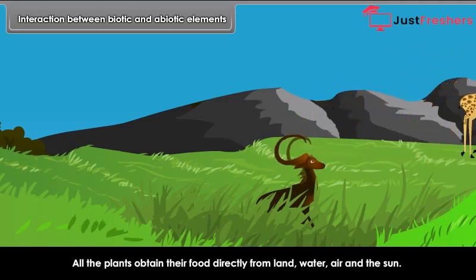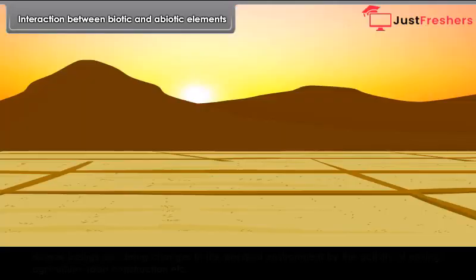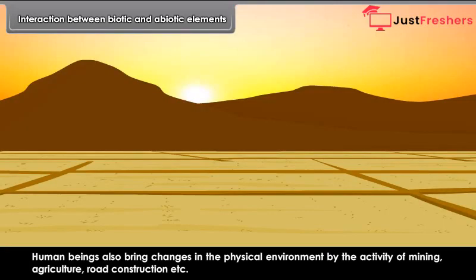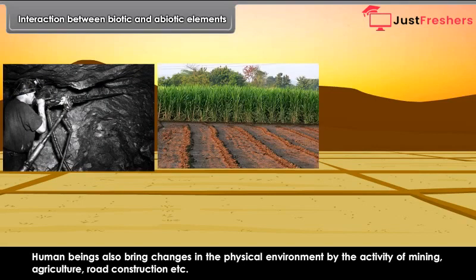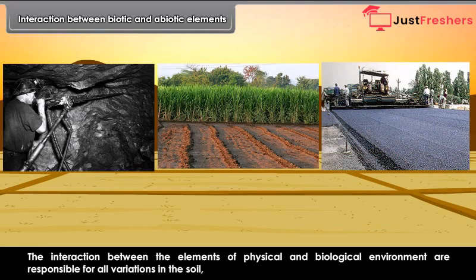All animals, whether herbivores or carnivores, get their food from plants and animals. Human beings also bring changes in the physical environment through activities of mining, agriculture, road construction, etc. The interaction between the elements of physical and biological environment is responsible for all variations in the soil.